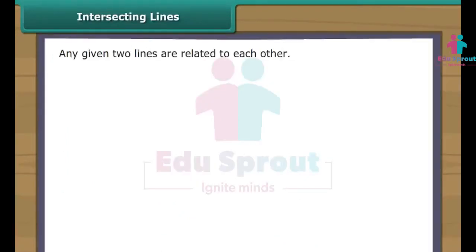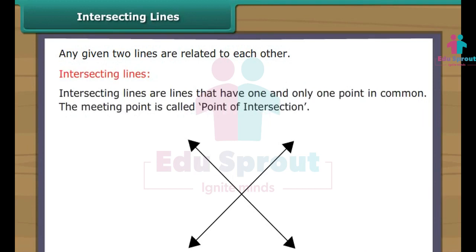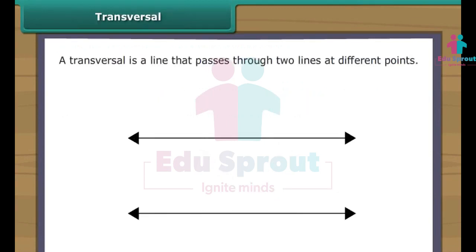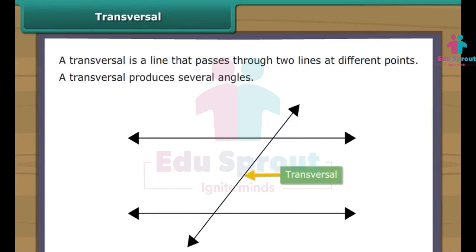Two lines are related to each other in different ways. Intersecting lines are lines that have one and only one point in common. This meeting point is called the point of intersection. A transversal is a line that passes through two lines at different points. Mostly, a transversal produces several angles.